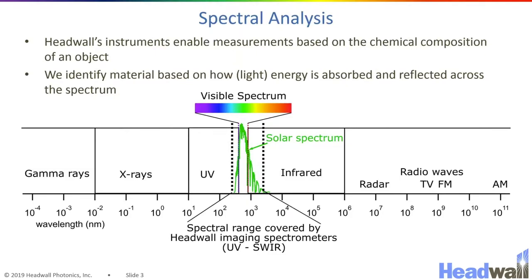Headwall's imaging spectrometers operate in the region of the electromagnetic spectrum that is covered by the sun. So in this figure here, we see a cartoon of the entire electromagnetic spectrum. The solar spectrum is depicted by this green curve here.